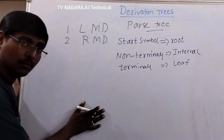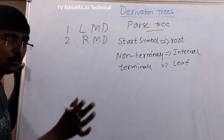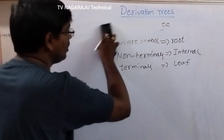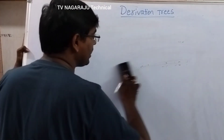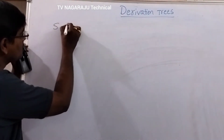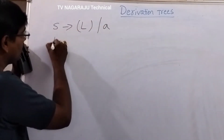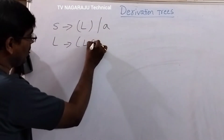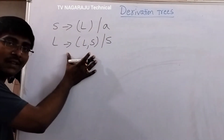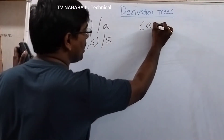Now we will consider one example and derive a string using both leftmost derivation and rightmost derivation, then construct both the leftmost derivation tree and the rightmost derivation tree. Suppose the grammar is: S → (L), L → L,S | S. Assume this is the given grammar. The required string is (a,a).